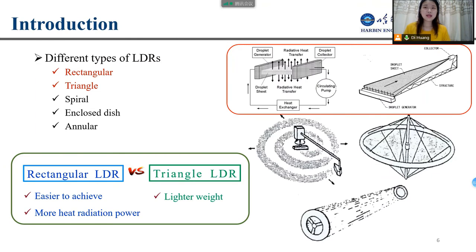There are many types of LDRs such as rectangular, triangle, spiral, enclosed dish, and annular. Among them, the rectangular LDRs and triangular LDRs are considered as feasible models for their simple structure. Compared with the triangular LDRs, the rectangular LDRs are easier to achieve and can transfer more heat radiation power. So in this paper, I will discuss the rectangular LDRs.